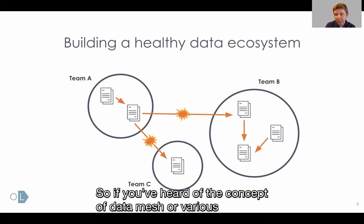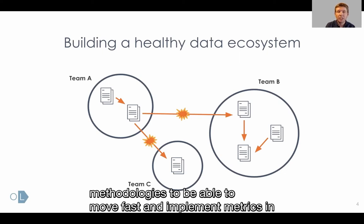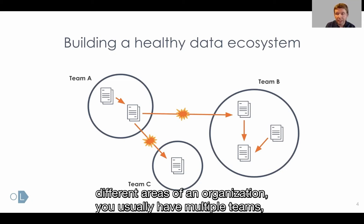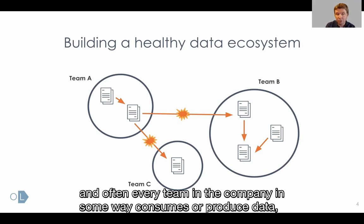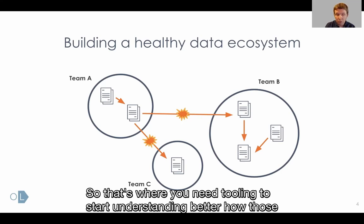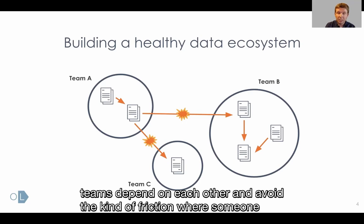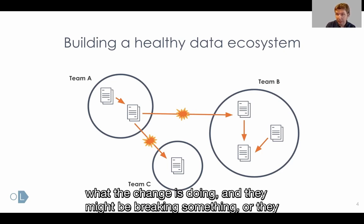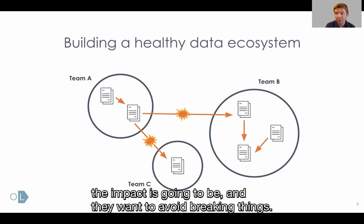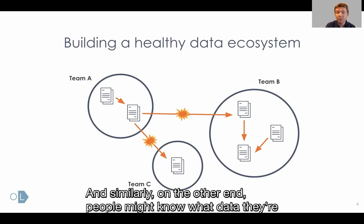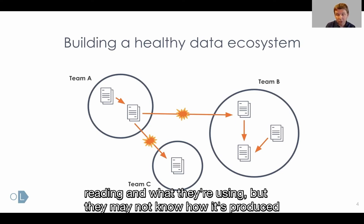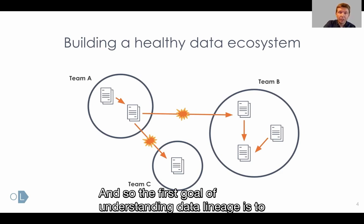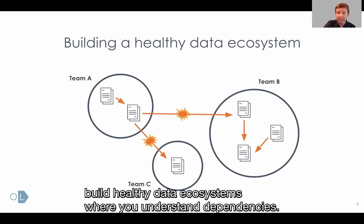If you've heard of the concept of data mesh or various agile methodologies to move fast and implement metrics in different areas of an organization, you usually have multiple teams. Often every team in the company in some way consumes or produces data, and that creates a lot of dependencies. That's where you need tooling to better understand how those teams depend on each other and avoid the friction where someone makes a change without understanding the downstream impact.